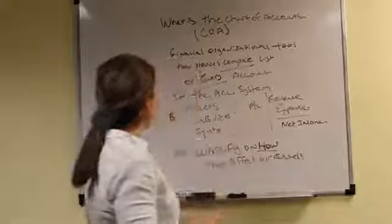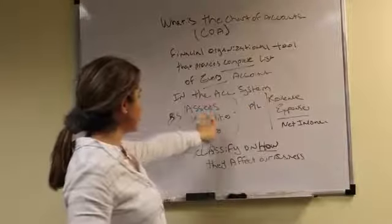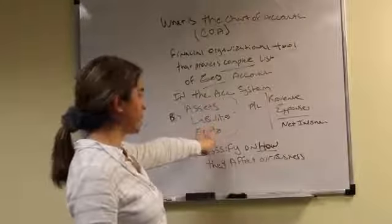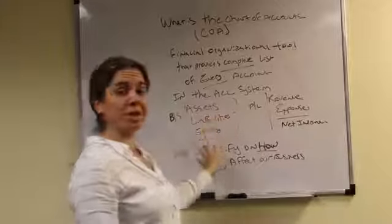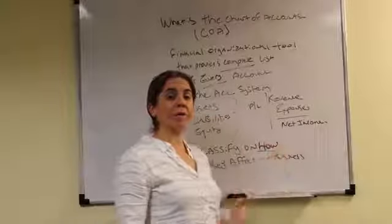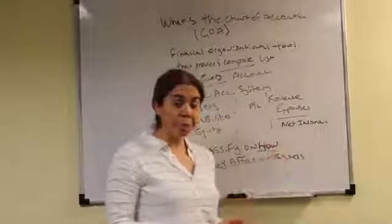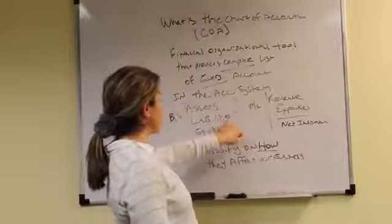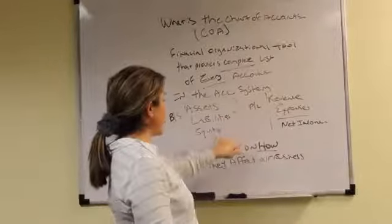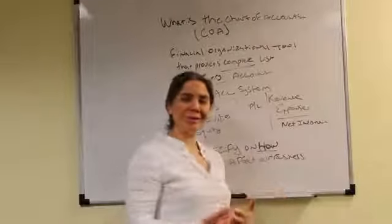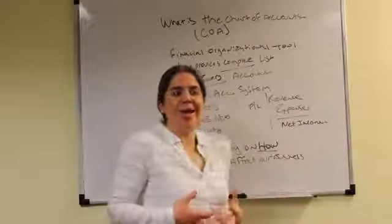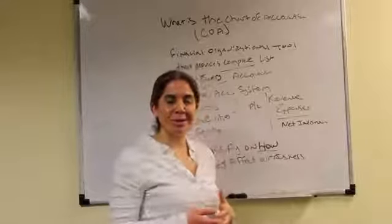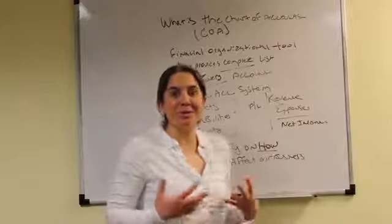On the other side we have our assets, liabilities, and equity. Assets and liabilities are all the stuff related to what we own and what we owe. Equity represents us as the business owner — what we have vested into the business or if we took money out.